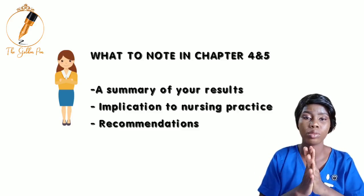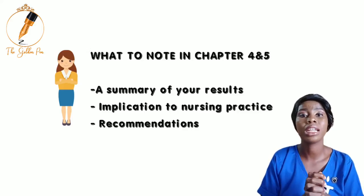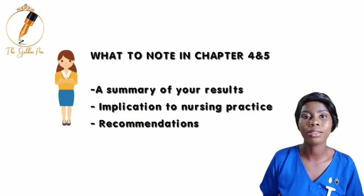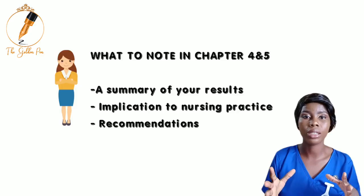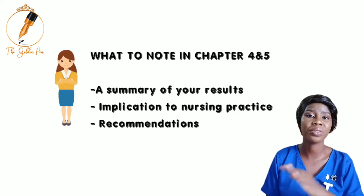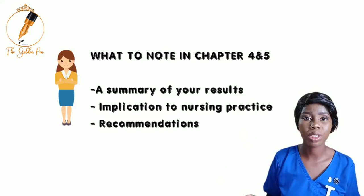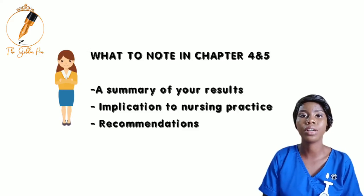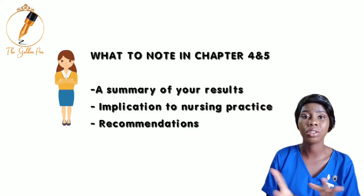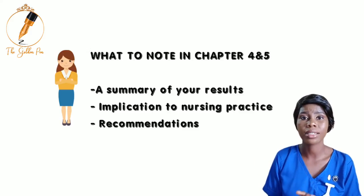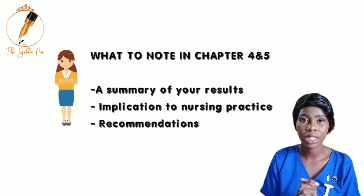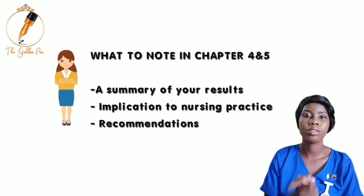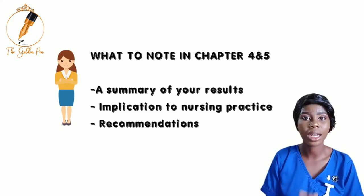Now in Chapter Five, what you should have a good understanding of are, one, the implications to nursing practice. This is something the examiner may choose to ask you because this is where the entirety of the research paper — whether it be 96 pages, 100 pages, or 50 pages — applies to nursing practice. So you should understand your implications to nursing practice, nursing education, and nursing research properly because you may be asked. Then another thing is your recommendations, because your recommendations are your own words as a researcher, and you should be able to state them clearly.